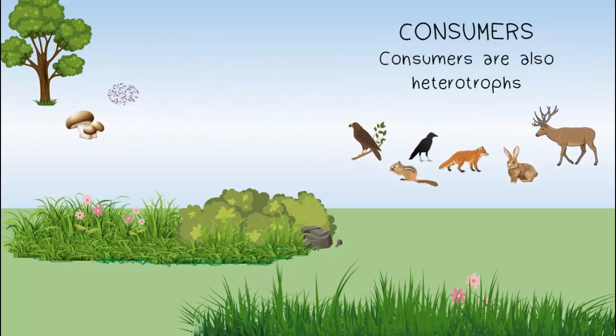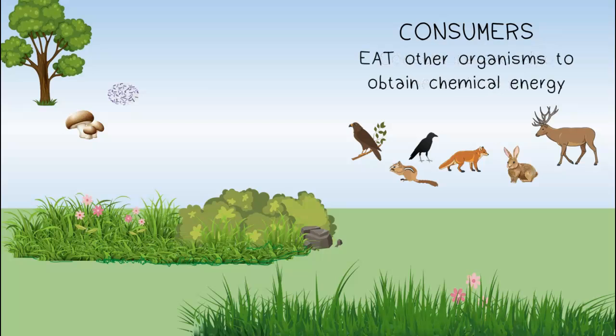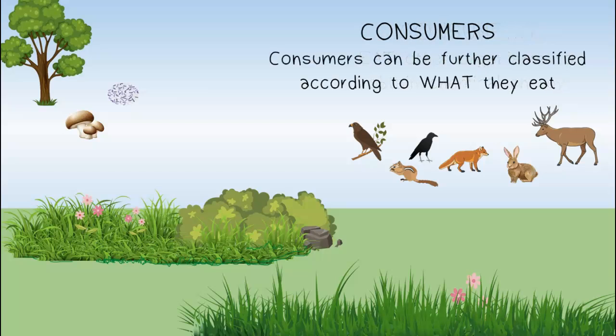Consumers are also heterotrophs. Consumers eat other organisms to obtain chemical energy. Consumers can further be classified according to what they eat.